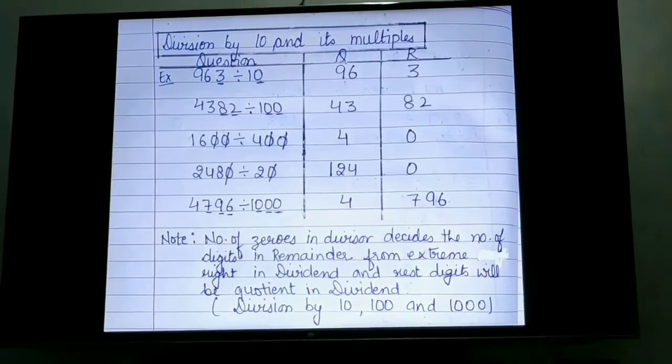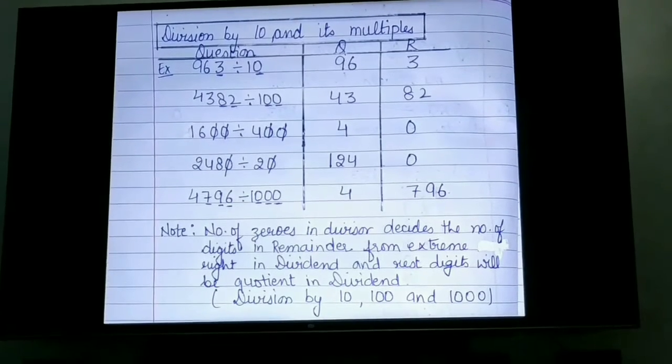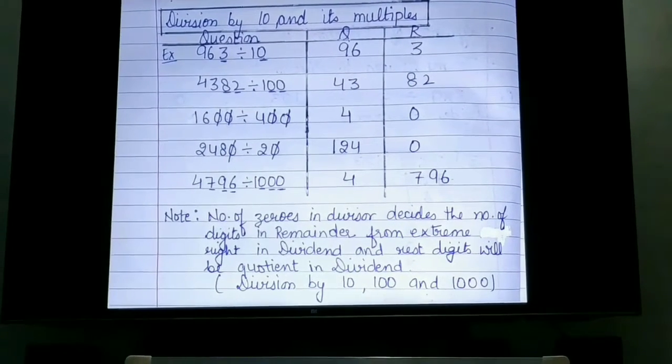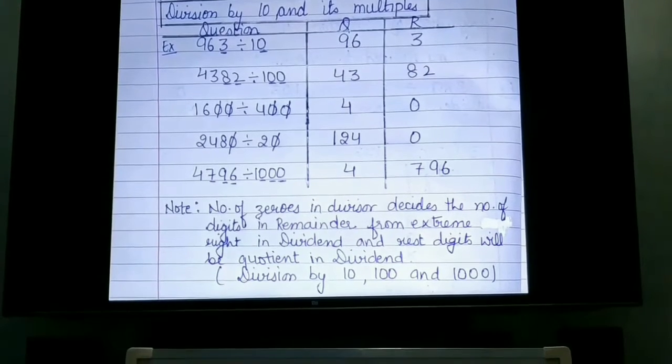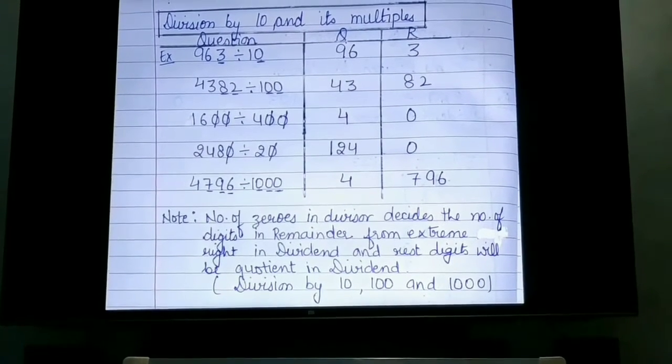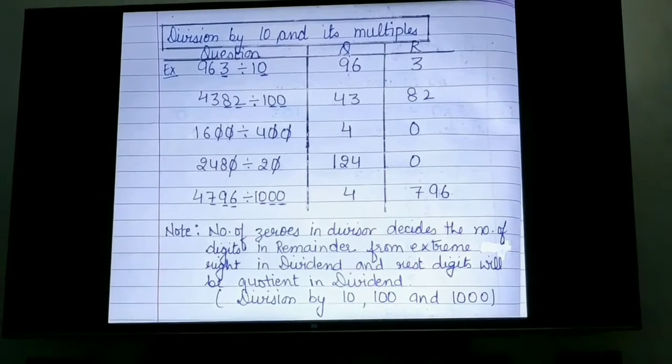Now, the one thing that you have to keep in your mind: if you are dividing by 10, 100 and 1000, so the number of zeros in the divisor decides the number of digits in remainder from extreme right in dividend and the rest digits will be quotient in dividend.